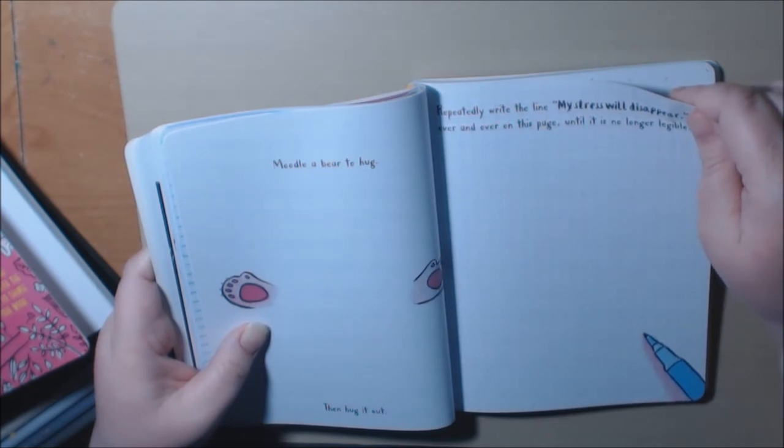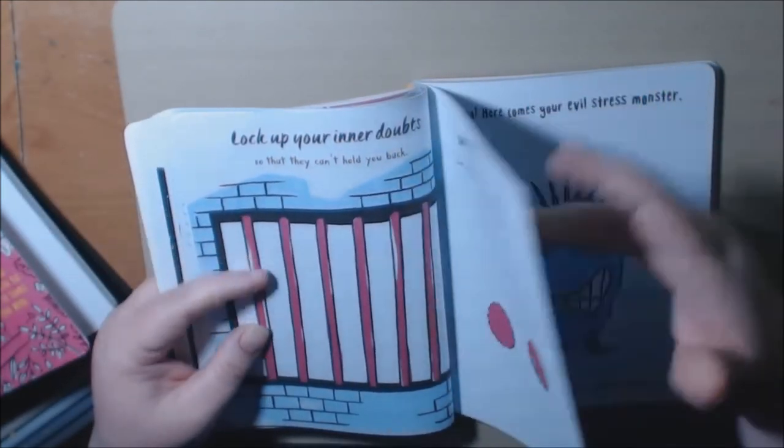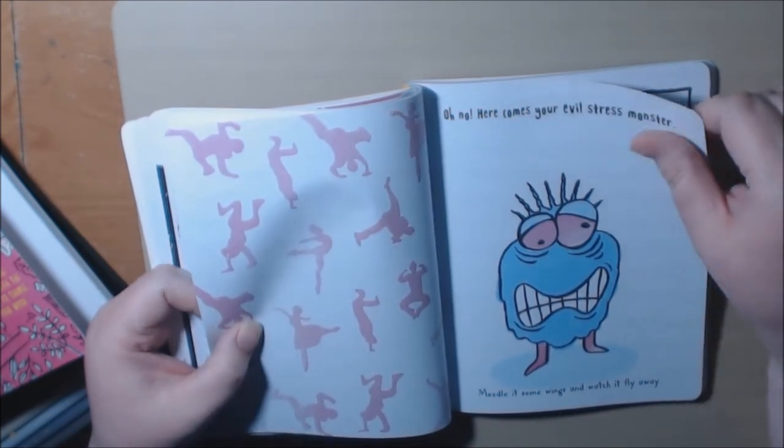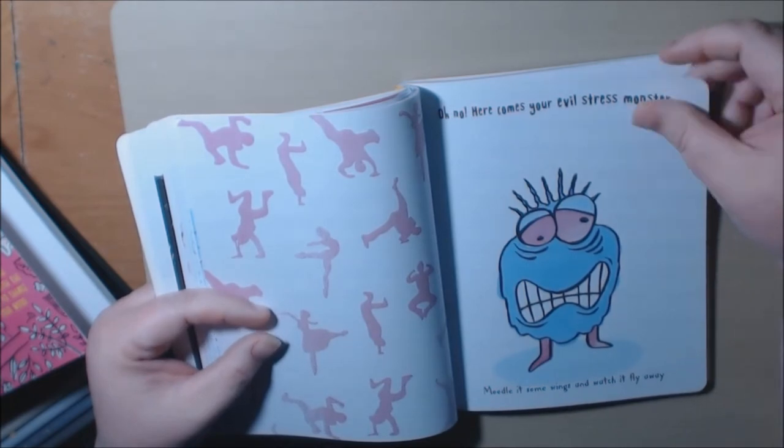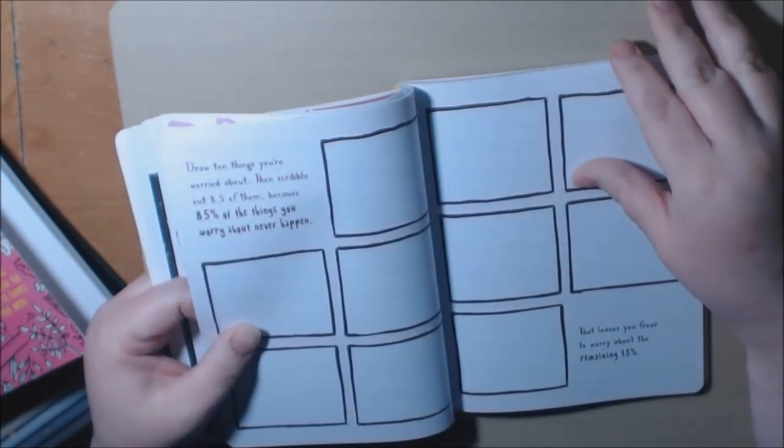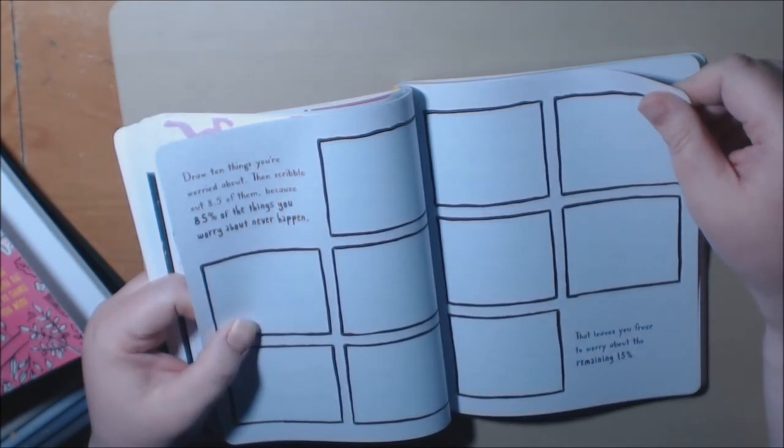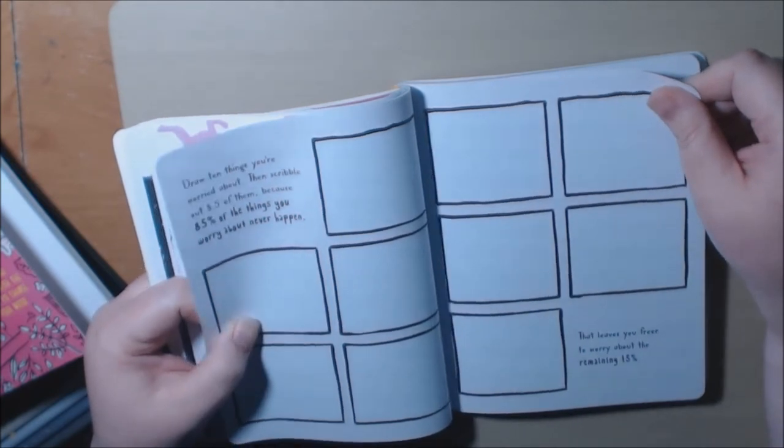Repeatedly write, my stress will disappear over and over until it no longer legible. Oh no, here's your evil stress monster. Moodle it some wings and watch it fly away. Draw ten things you worry about. Then scribble out 8.5 of them. Because 85% of the things you worry about never happens.